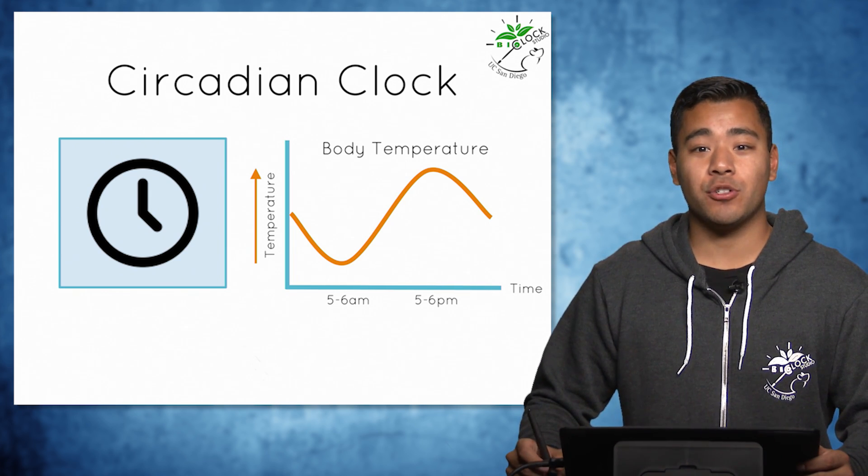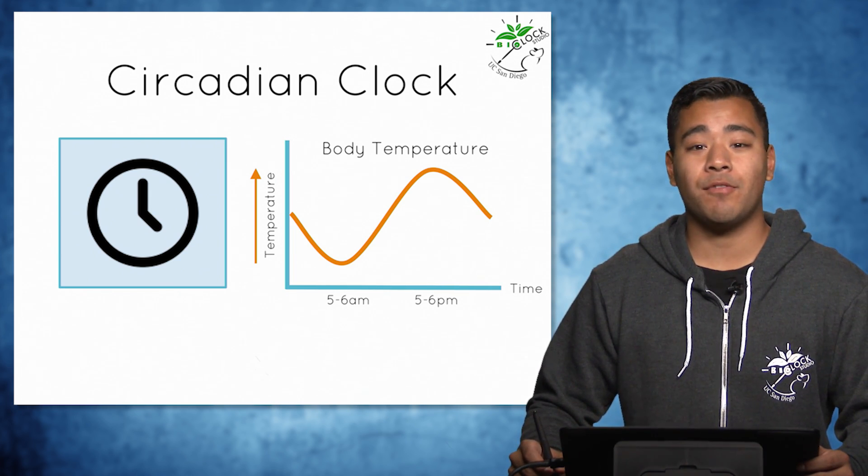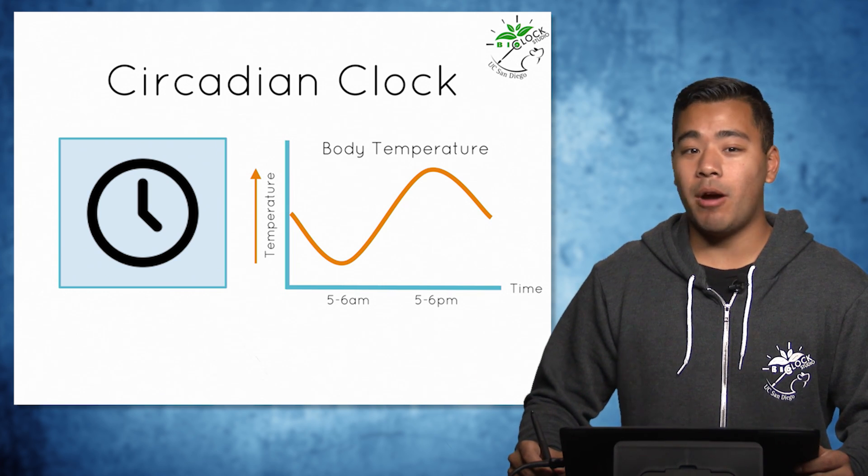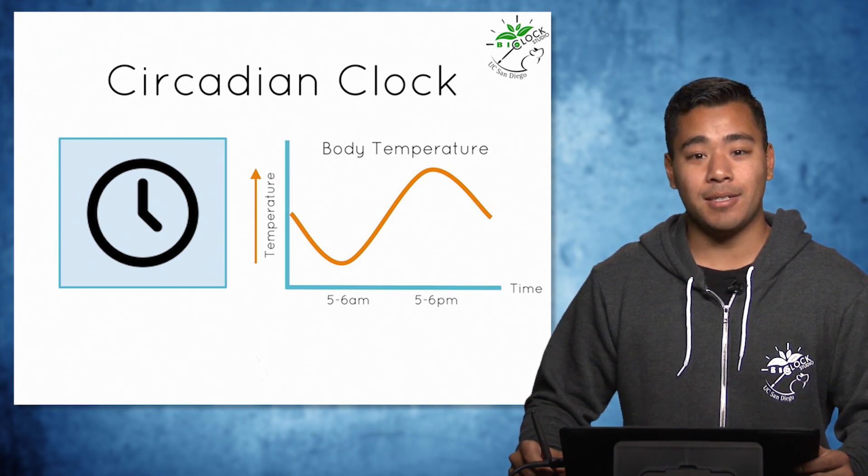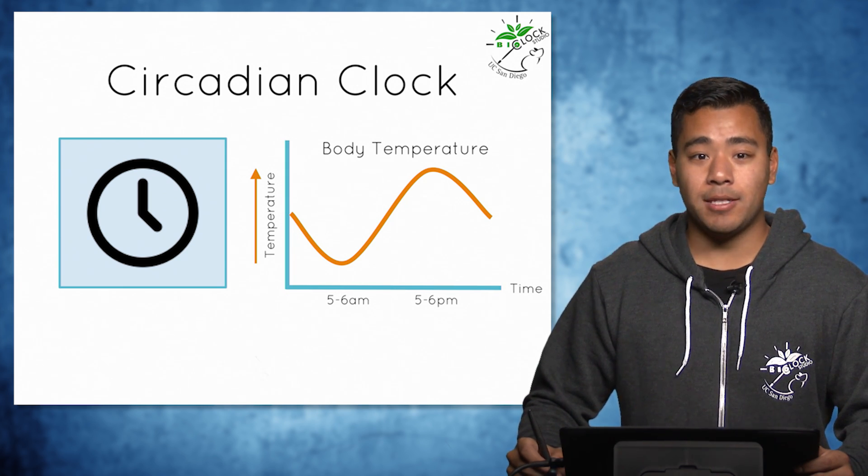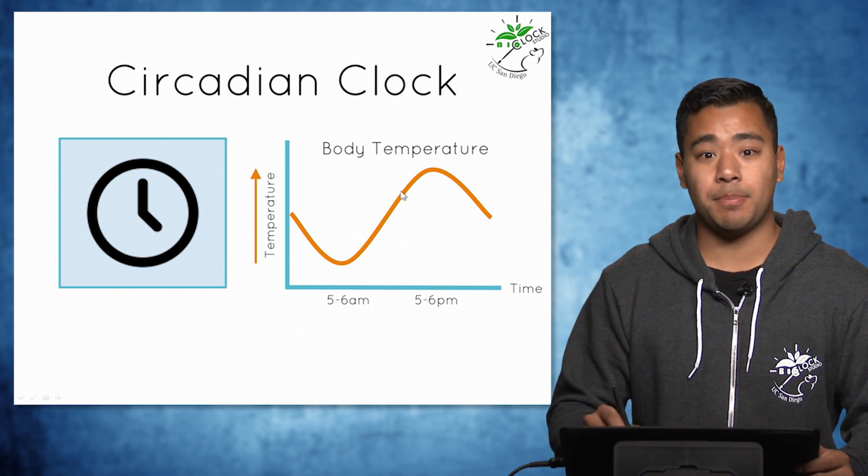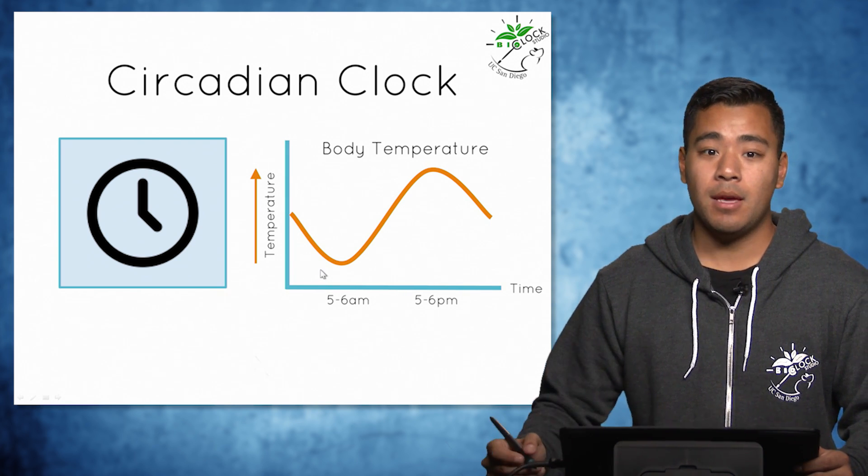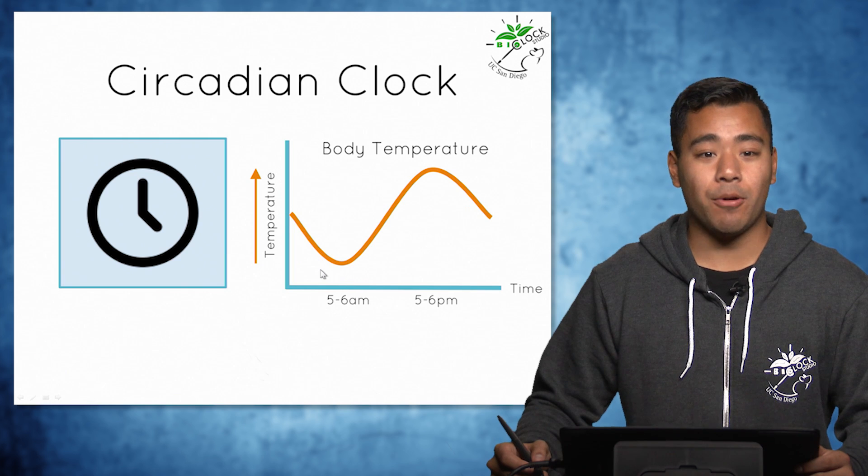In humans, the circadian clock controls physiological processes that rise and fall every 24 hours, with a model example of this being oscillations in body temperature. As you can see, the body temperature peaks around 5 to 6 pm and is lowest around 5 to 6 am. This cycle then repeats every 24 hours.